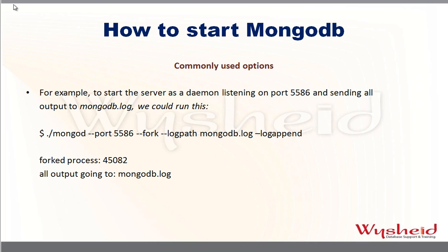Here is an example where mongod uses port 5586 and sends all output to mongodb.log: 'mongod --port 5586 --fork --logpath mongodb.log'. The log file will be created in the current directory from which you are executing mongod. If you want to specify a different directory, you must give the fully qualified path. The --logappend option indicates that the log file will get appended, so whenever new restarts happen, the existing log file will be updated with new information.